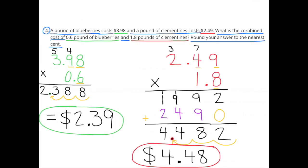Number 4: A pound of blueberries costs $3.98 and a pound of clementines costs $2.49. What is the combined cost of 6 tenths of a pound of blueberries and 1 and 8 tenths pounds of clementines? Round your answer to the nearest cent. $3.98 times 6 tenths equals 2 and 388 thousandths, rounded to the nearest cent is $2.39. And $2.49 times 1 and 8 tenths equals 4 and 482 thousandths, rounded to the nearest cent is $4.48.